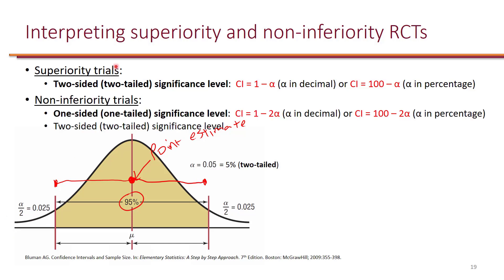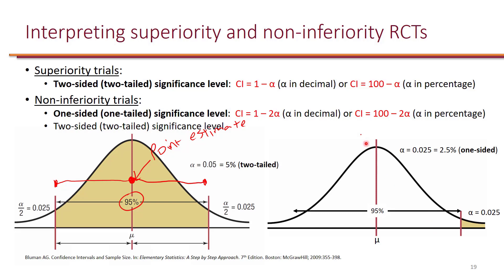When it comes to non-inferiority trials, we really only care about one side of the confidence interval because we're not trying to show superiority — we're just trying to show that the intervention is not worse than the control. In superiority, we use a two-sided alpha because it can go either direction. In non-inferiority, we're only looking at one side, so it's okay to use a one-sided alpha. That means we can use an alpha of 2.5% with a 95% confidence interval. If we're using an alpha of 2.5 in a non-inferiority trial, we multiply by 2: 2.5 times 2 is 5, and you get the complete 100%.